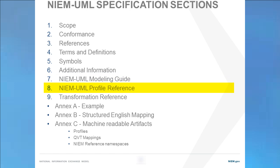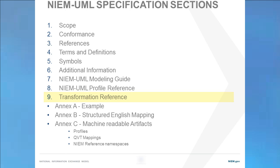The more detailed reference is the profile reference, which specifies in detail how UML is used to model Niem. Section 9, the transformation reference, is primarily intended for tool vendors implementing the transformations between models and NiemXML artifacts, or from NiemXML artifacts back into models. Appendix A provides an example and would also be useful for those intending to model in NiemUML.